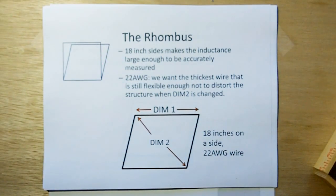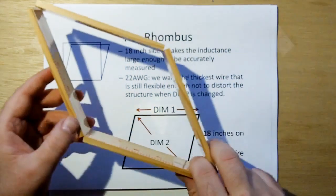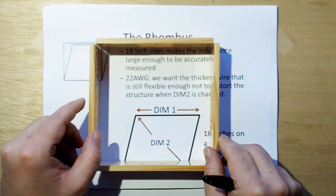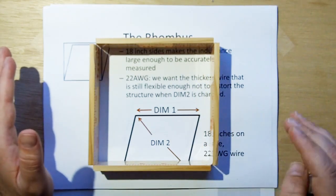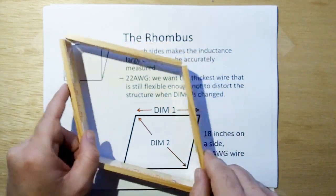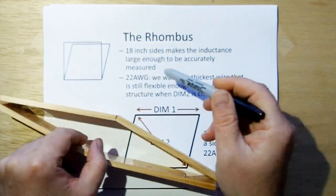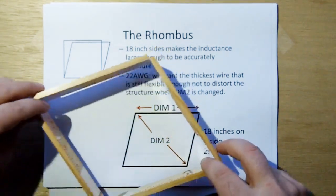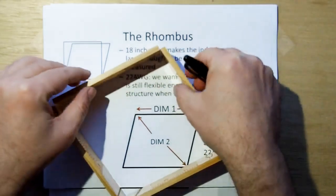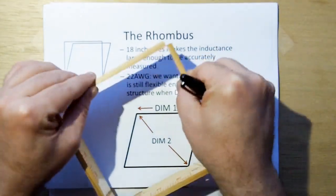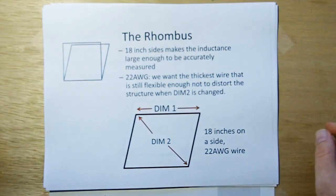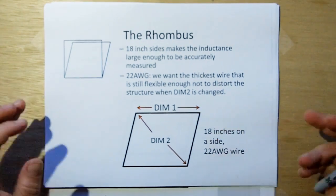And so what we want is we want the sides of this inductance to be long enough so that the inductance is large enough to be accurately measured. Because if you get too low an inductance, it gets harder and harder to measure. The other thing we want is we want to use 22-gauge wire. Basically, we want the thickest wire that's still flexible enough to allow the rhombus to change without there being distortion due to the wire not wanting to bend at the corners. So 22-gauge wire was found to be the best in my experiments 20 years ago, so that's what we're going to use today. And 18 inches is what I used 20 years ago.